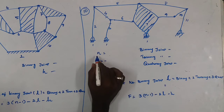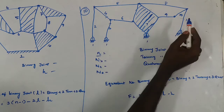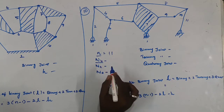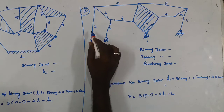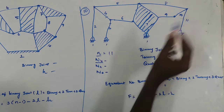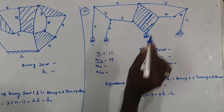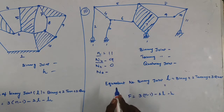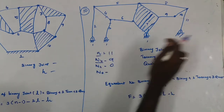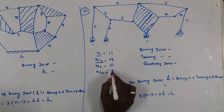Problem 10: Total links n = 11. There are 9 binary links, 0 ternary links, and 2 quaternary links. The mechanism has 5 closed loops. Now we identify the joints to find equal number of binary joints.